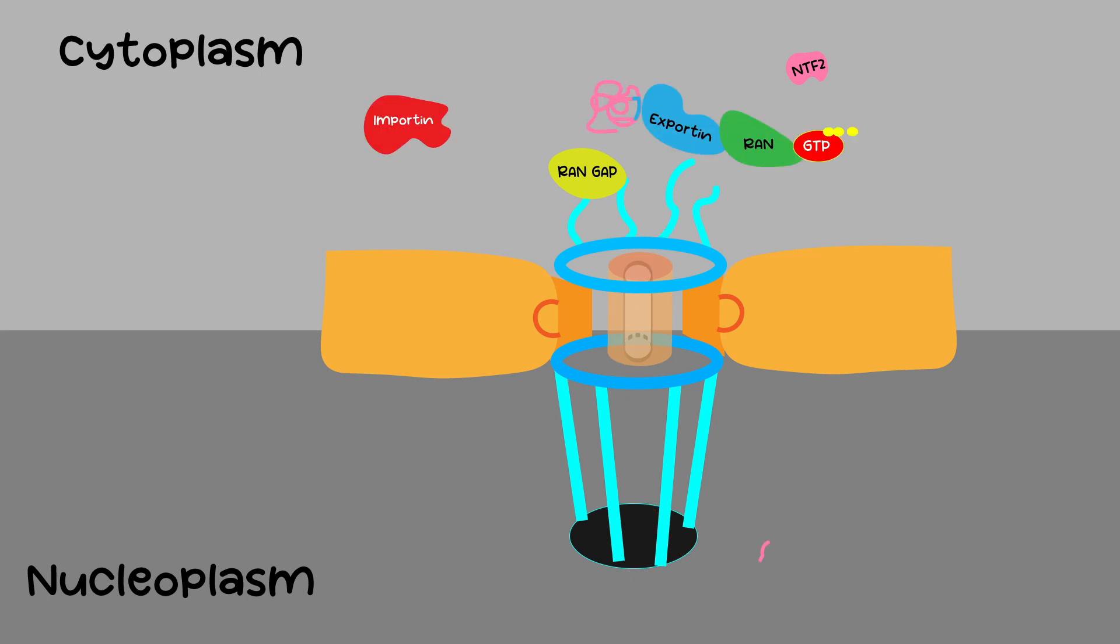The protein complex goes through the nuclear pores to the cytoplasm. RAN GAP binds to the complex and stimulates RAN-GTP to hydrolyze to RAN-GDP, making it release the cargo to the cytoplasm. Exportin and RAN-GDP are recycled by the NTF2 protein, transporting them inside the nucleus again.